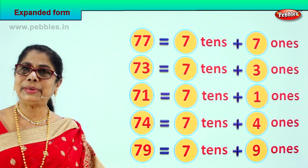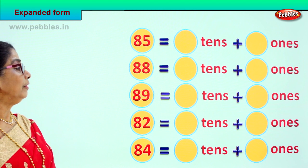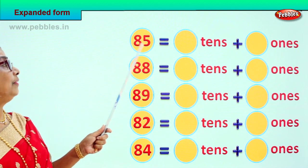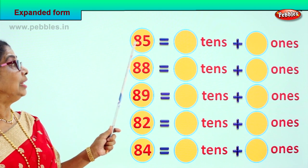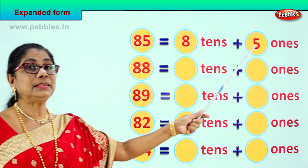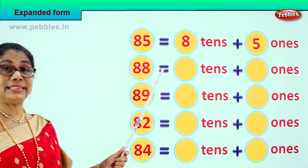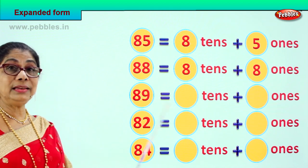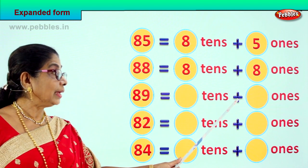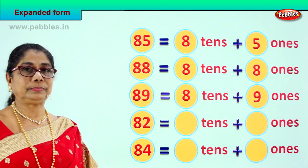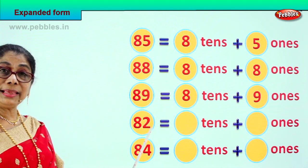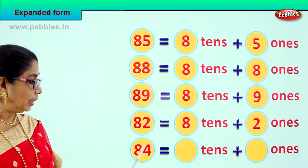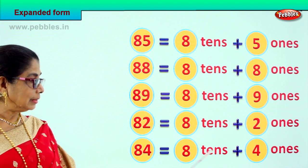Let's look at our next set of numbers, beginning with 85. We have to put down as tens and ones. 85 is 8 tens and 5 ones. 88 is equal to 8 tens plus 8 ones. 89 is equal to 8 tens plus 9 ones. 82 is equal to 8 tens plus 2 ones. And 84 is equal to 8 tens plus 4 ones.